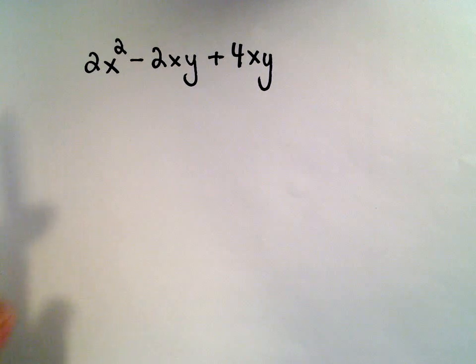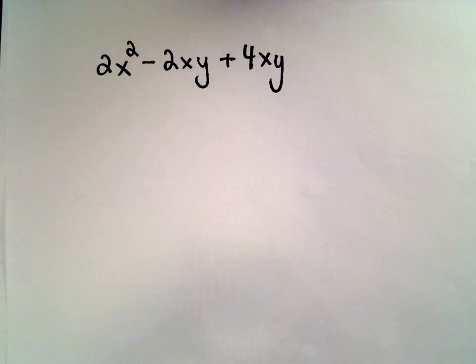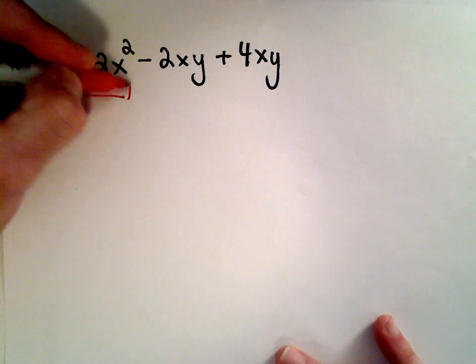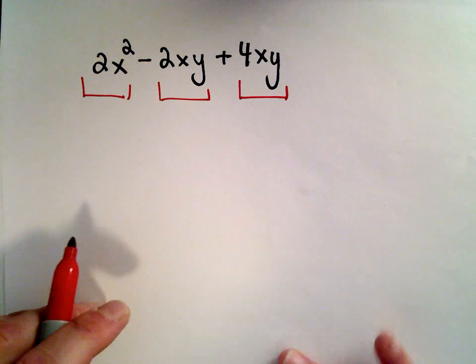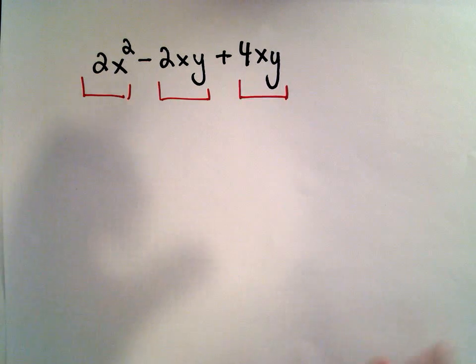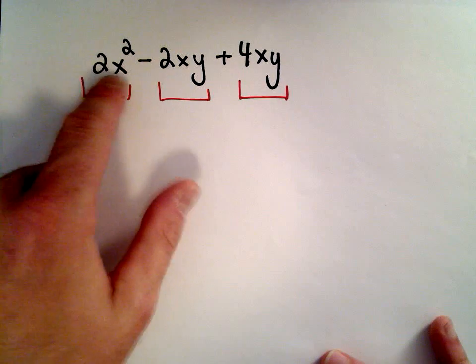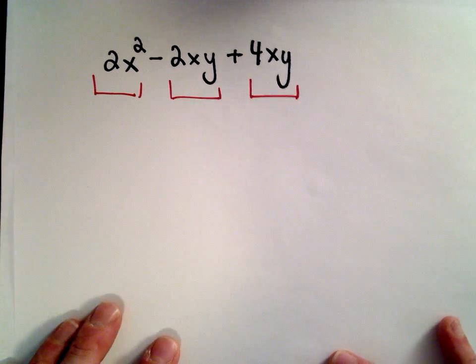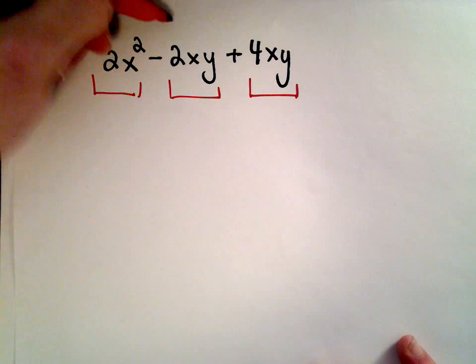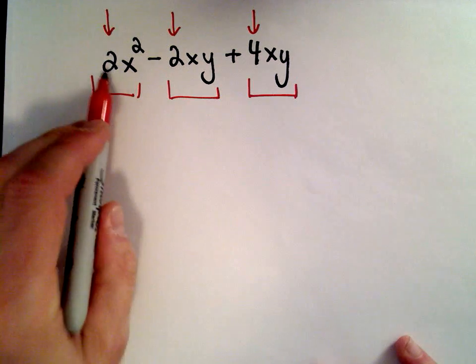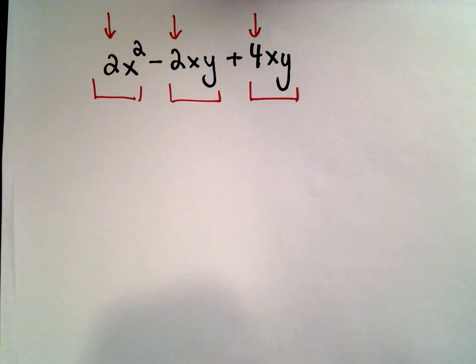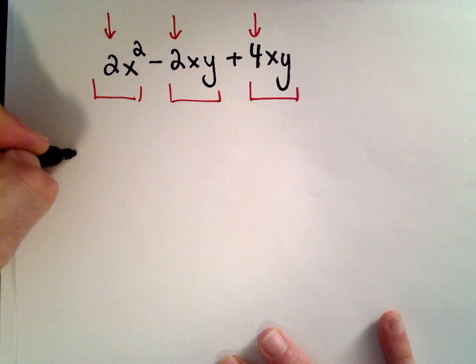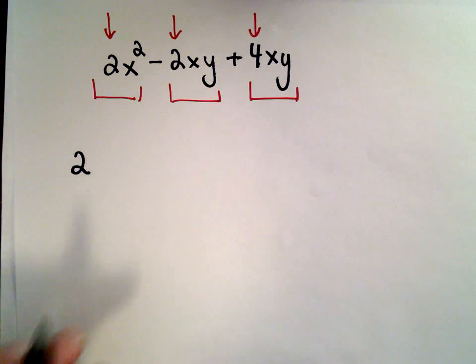So let me grab my red pen here. The thing that I notice in this problem to get me started is I see that there's pluses and minuses, addition and subtraction. So in this case we have three terms. We've got this 2x², the 2xy, and the 4xy. So the first thing I look at is the numbers in front of each of these terms. So I've got a 2, a 2, and a 4. And I think, what's the largest number that will go into 2, 2, and 4? Well, 2 is the largest number that will go into each of those. So I can factor a 2 out front.